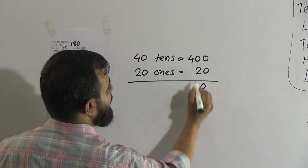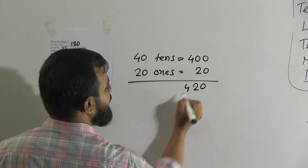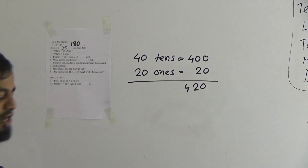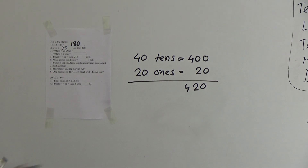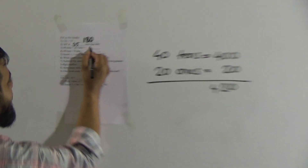Add it: ones place is 0, tens place is 2, hundreds place is 4. So 420 will be our answer. Write down 420 here.